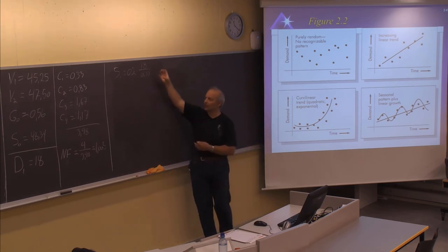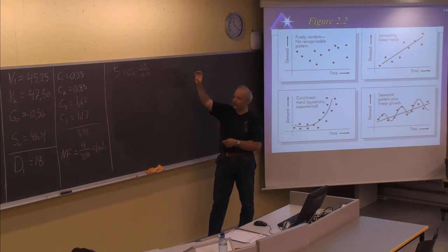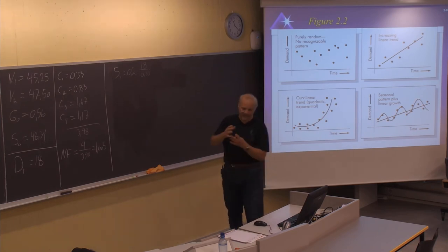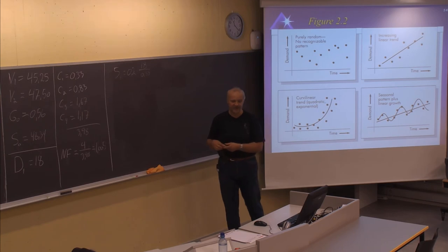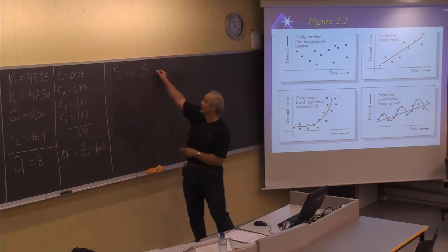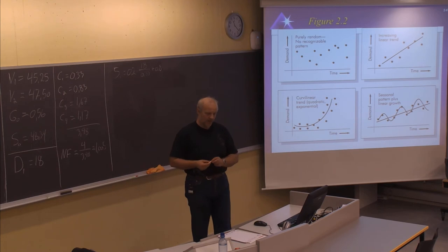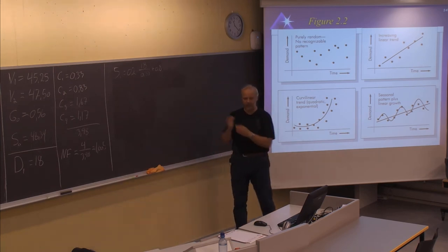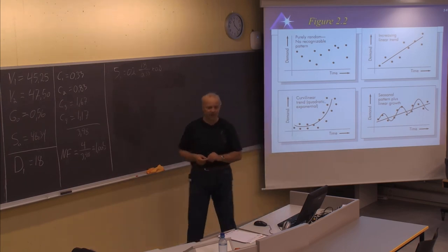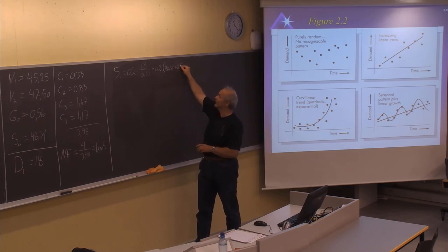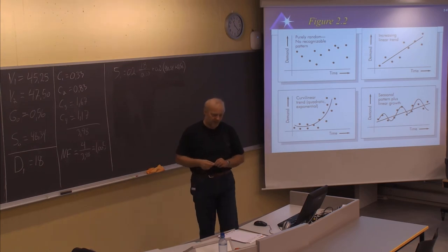Dividing 18 by 0.33 gives the de-seasonalized value for the new measured value. We also need to add one minus alpha, which is 0.8, to the previous forecast without seasonalizing. The previous forecast is the sum of the previous series and the previous gradient: 0.8 multiplied by 48.34 plus 0.56, a total of 50.03.